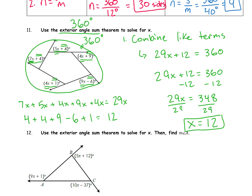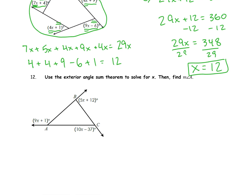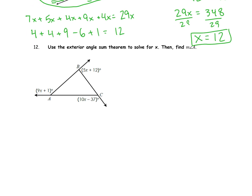The process: first, recall that the exterior angle sum is 360. Add all of the angles up — that should equal 360. Set up the equation and solve. We're going to do this process again with number 12 to solidify it. We're going to use the exterior angle sum theorem to solve for x, and then find the measure of angle A. So now we're not just solving for x — we're trying to find what the exterior angle measure is for angle A.